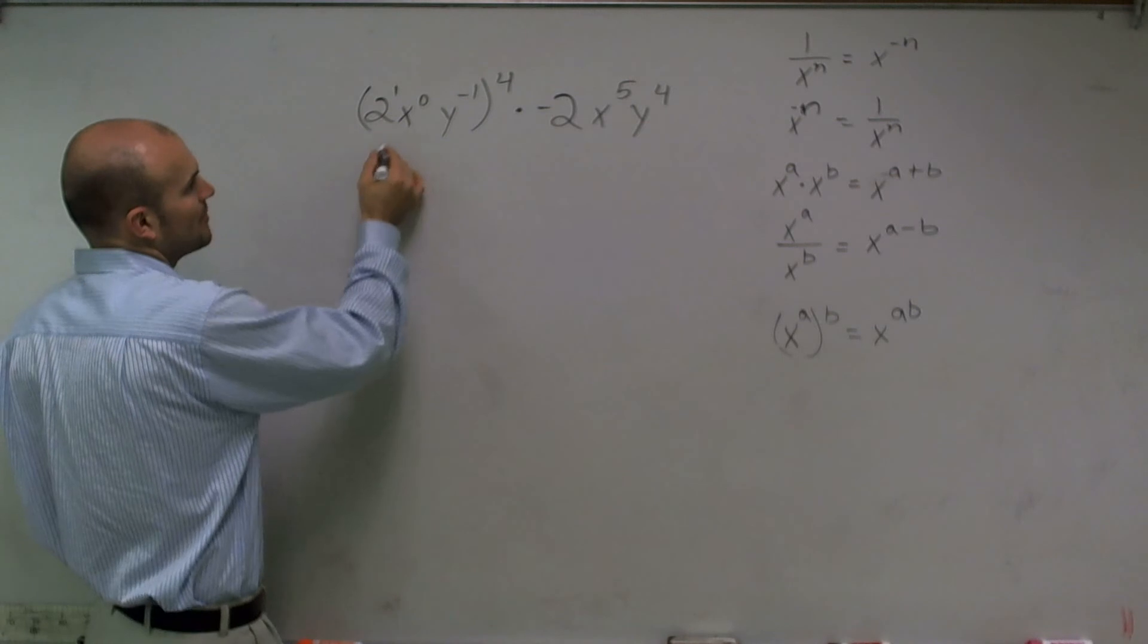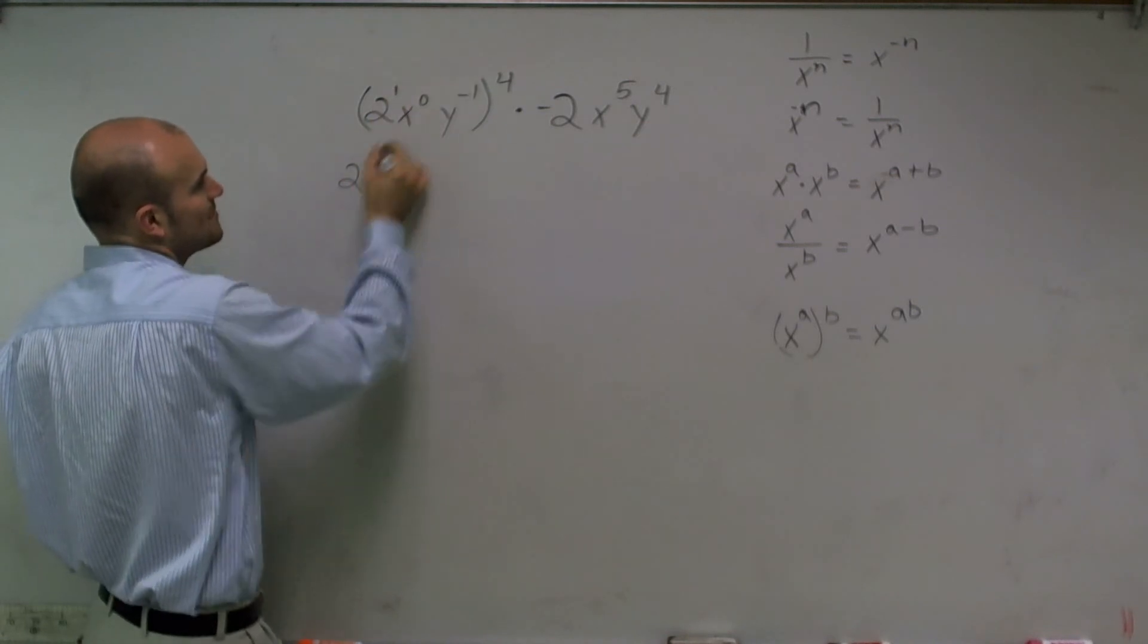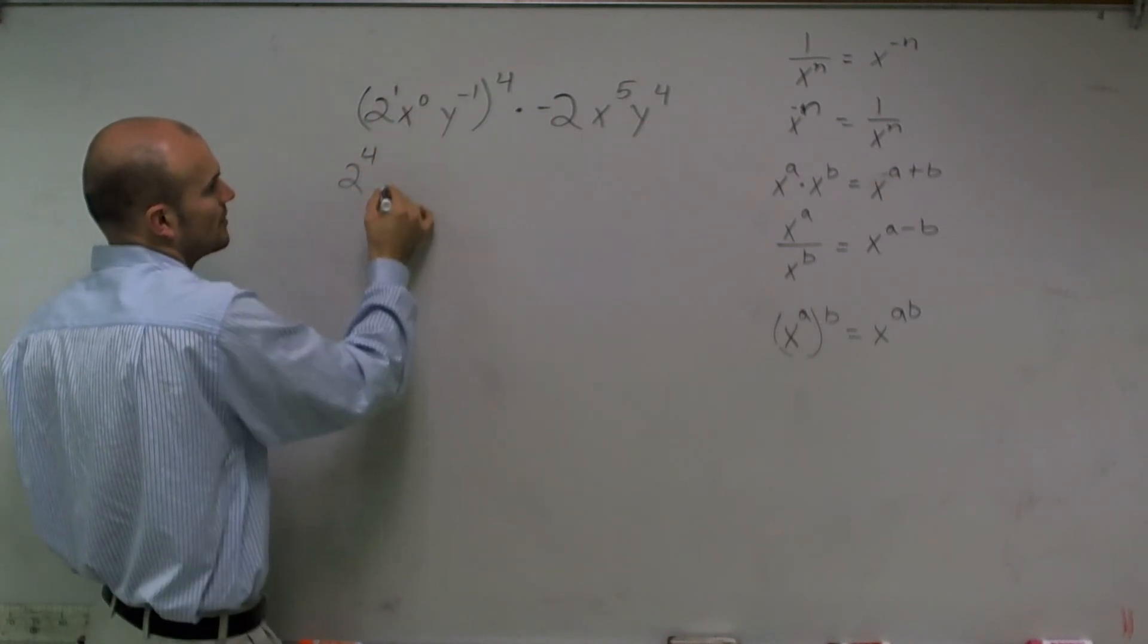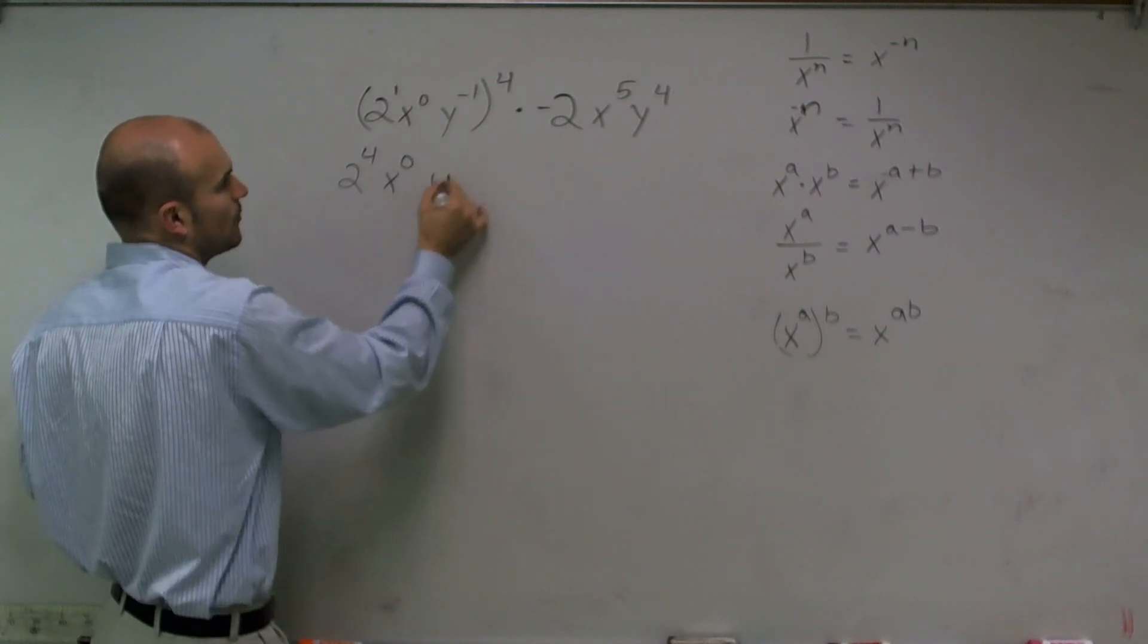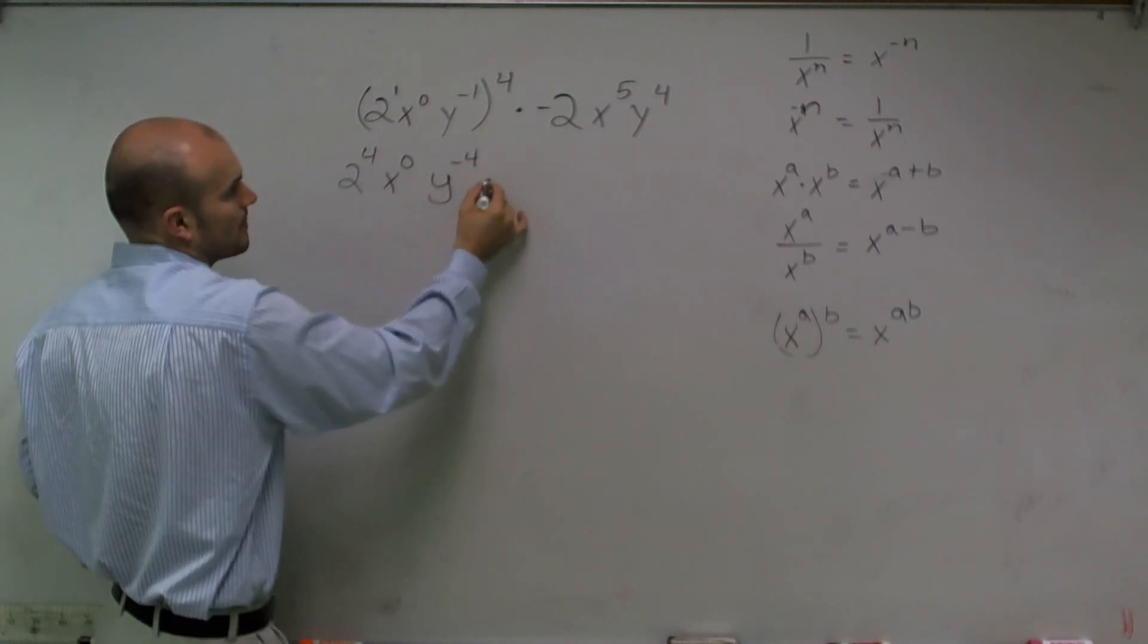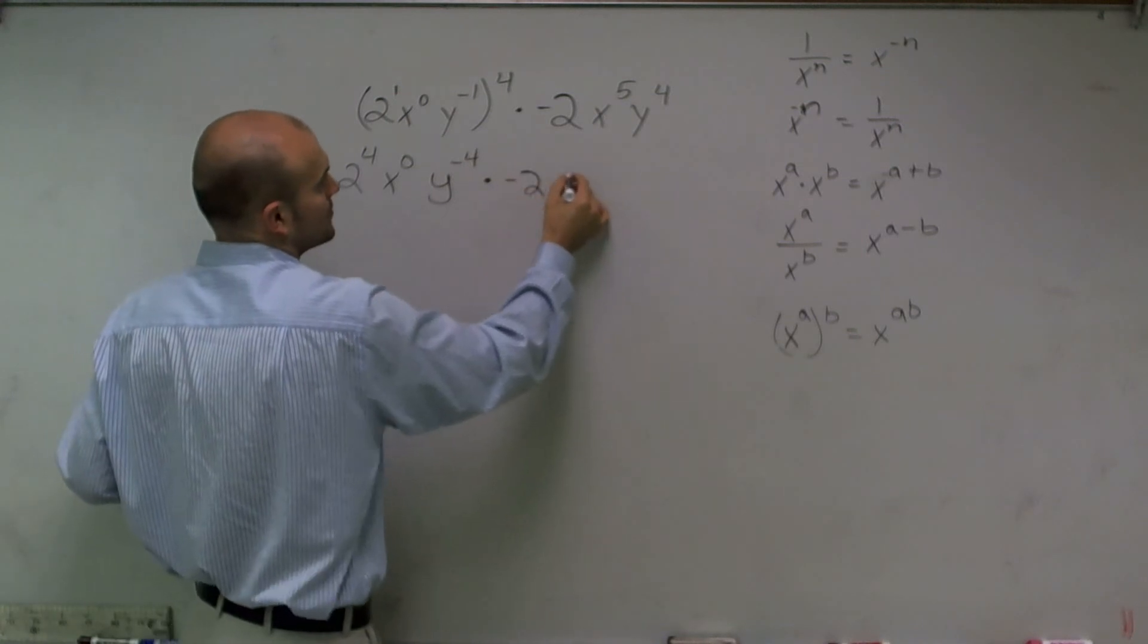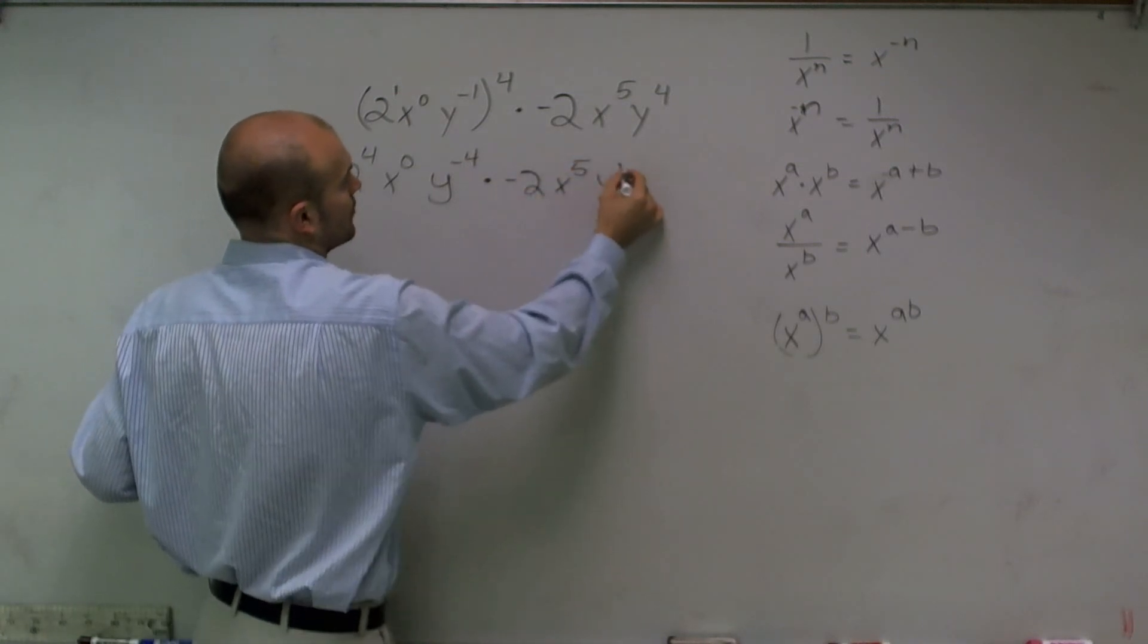So therefore, I really have 2 to the 1 times 4, which is 2 to the 4th, x to the 0 times 4, which is x to the 0, and y to the negative 4th times 4, times negative 2x to the 5th y to the 4th.